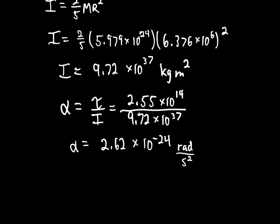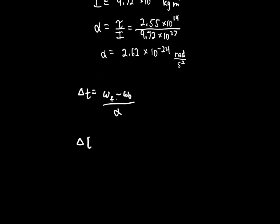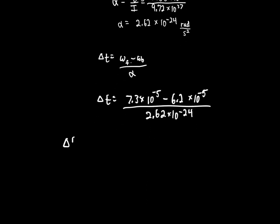Change in time equals the change in omegas divided by alpha: (7.3 times 10 to the negative 5 minus 6.2 times 10 to the negative 5) divided by 2.62 times 10 to the negative 24. That gives a change in time of about 4.2 times 10 to the 18 seconds.